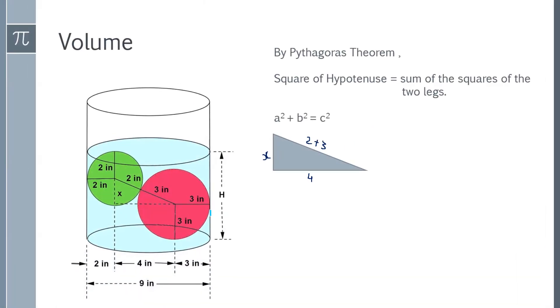H, the water level in the cylinder, is the summation of this 3 inch plus x plus 2 inch. So, what is x? Let's find out x.